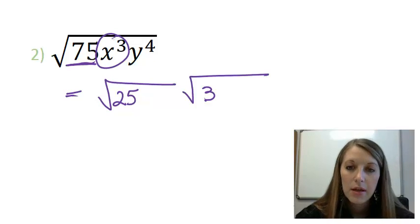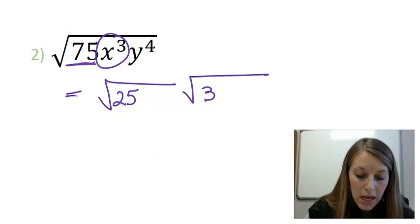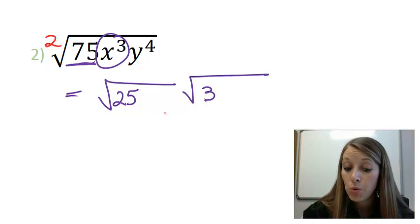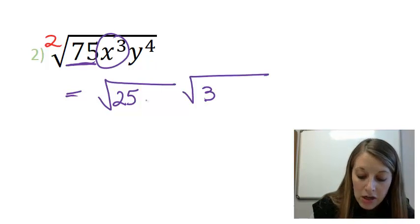X cubed. Now, I'm trying to take the square root of x cubed, which means I need pairs of these. So the largest amount of x's that I can take out in pairs is two of them. And I actually put all two of them here.